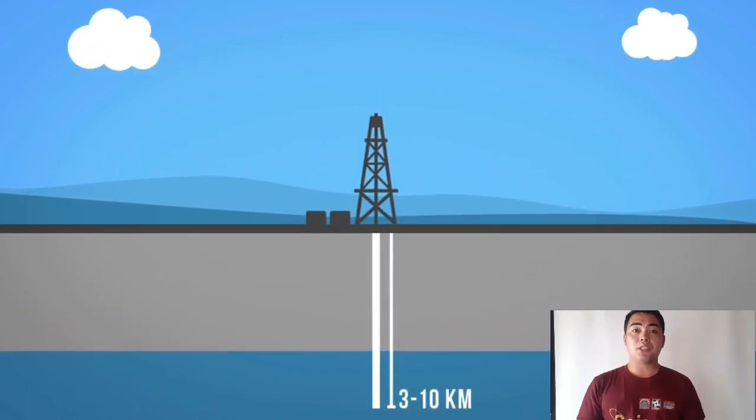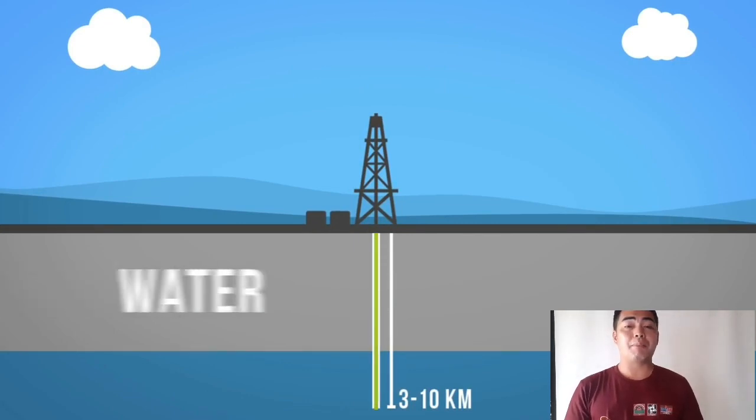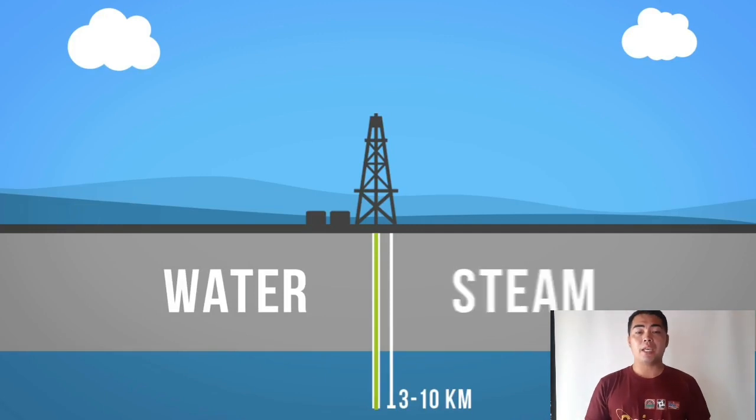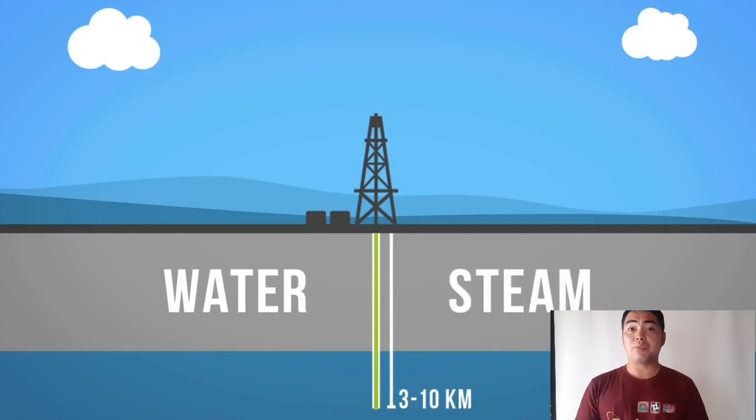Geothermal wells are drilled into the earth's crust at approximately 3 to 10 kilometers below. The heat is extracted with various methods, but in most cases is drawn from the earth using water and steam.